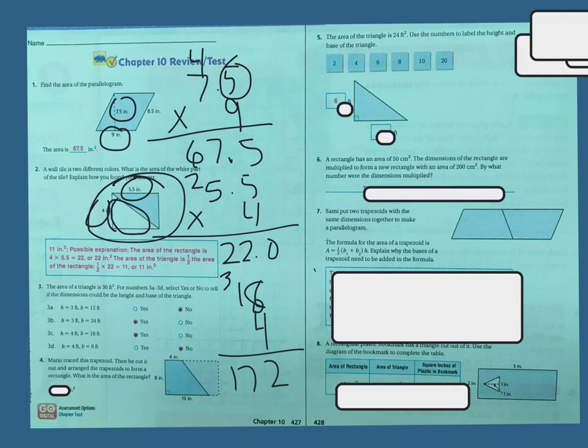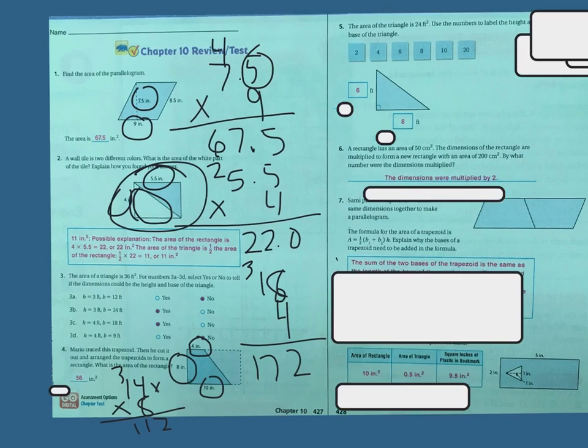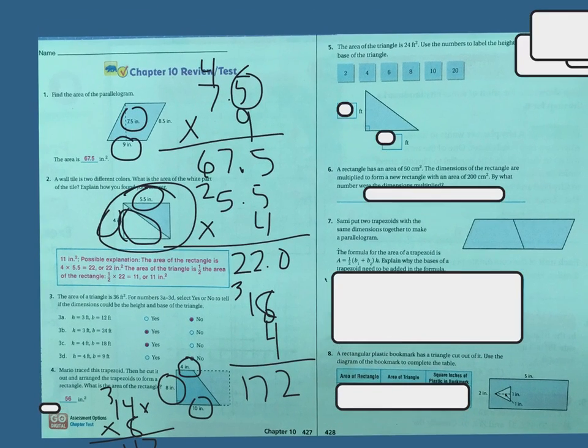So remember, trapezoid's area is base 1 plus base 2, which is 14, times the height, which is 8. 8 times 4 is 32, 8, 19, 11. And then you're going to divide that in half. So half of 112. Half of 100 is 50, half of 12 is 6. So half of 112 is going to be 56. So the answer is 56 inches squared.